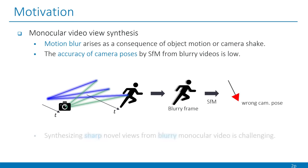In addition, the accuracy of camera poses extracted by structure from motion algorithms from blurry monocular videos, including deformable objects, is particularly low. Therefore, synthesizing sharp novel spatio-temporal views from monocular video faces challenges when blurriness presents in the given frames.